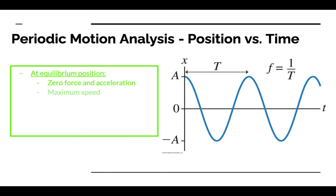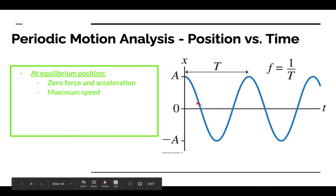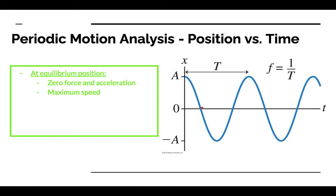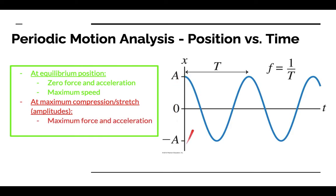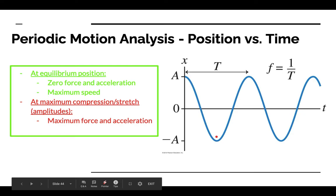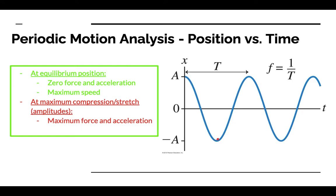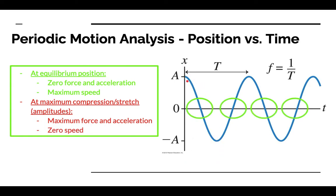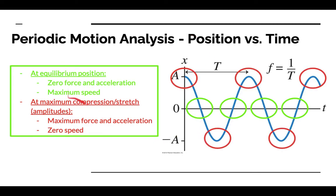Graph motion analysis. At the equilibrium position we have zero force and zero acceleration — we can see that because we're neither concave up nor concave down — but we have maximum speed because the slope is greatest there. At maximum compressions, we have maximum force and acceleration because the concavity is at a maximum at our amplitudes, so acceleration is also greatest. This is where we have stretching or compression at the amplitudes. Positive acceleration is where you're concave up, while negative acceleration is where you're concave down. We have zero speed because we are briefly changing direction at these points.